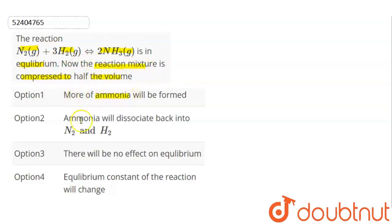More of ammonia will be formed. Ammonia will dissociate back into N2 and H2. There will be no effect on equilibrium. Equilibrium constant of the reaction will change.